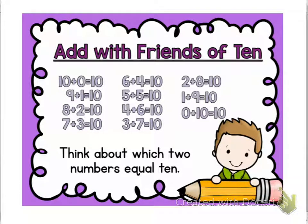Another strategy is add with friends of 10. Friends of 10 means it's 2 parts that make 10. So like 10 plus 0 equals 10, 9 plus 1 equals 10, 8 plus 2 equals 10, 7 plus 3 equals 10, 6 plus 4 equals 10, 5 plus 5 equals 10, 4 plus 6 equals 10, 3 plus 7 equals 10, 2 plus 8 equals 10, 1 plus 9 equals 10, and 0 plus 10 equals 10. We use these 10 buddies a lot, especially with bigger numbers. So it's going to be really important that we start to try to remember these friends of 10, these 10 buddies.